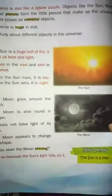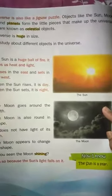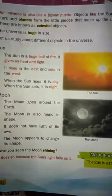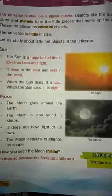Our universe is also like a jigsaw puzzle. Objects like sun, moon, stars, and planets form the little pieces that make up the universe. These are known as celestial objects — natural objects that exist outside the Earth's surface, like stars, planets, etc.